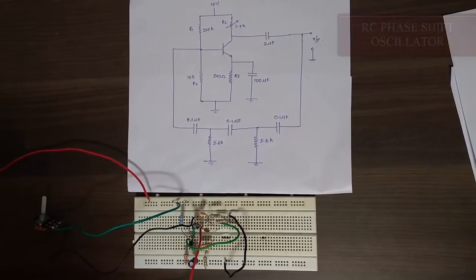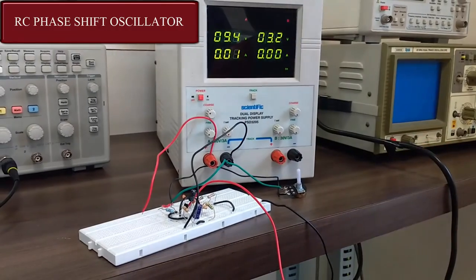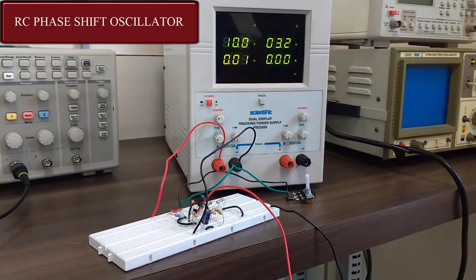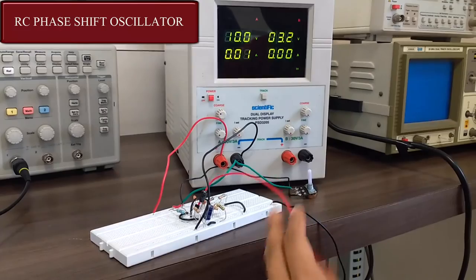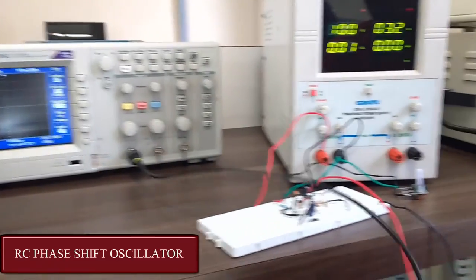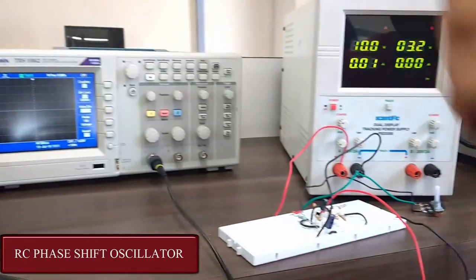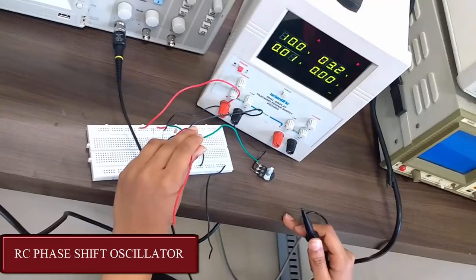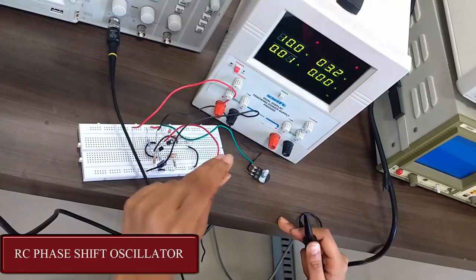Now let's see its output. Now let's give 10 volt power supply. And now let's check the output here. We are using DSO instead of CRO. These are the probes. And now let's connect it. Let's give the output here at the capacitor.